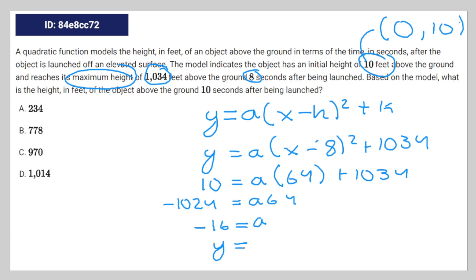So we have a function of negative 16 times (x minus 8) to the power of 2 plus 1,034.